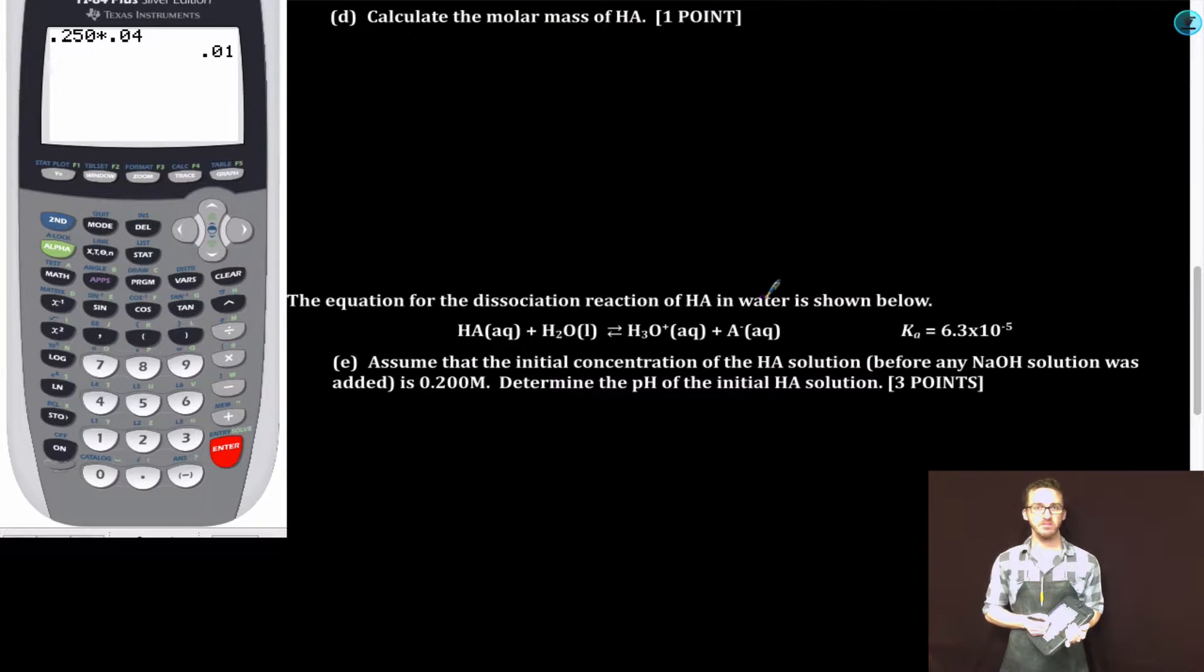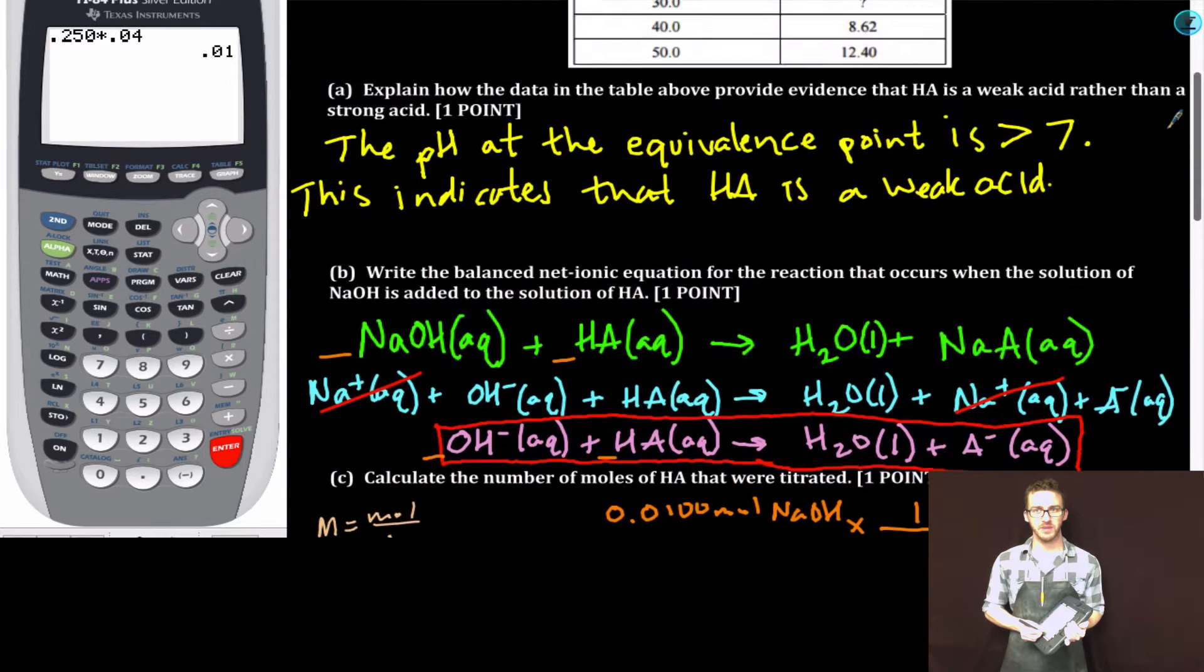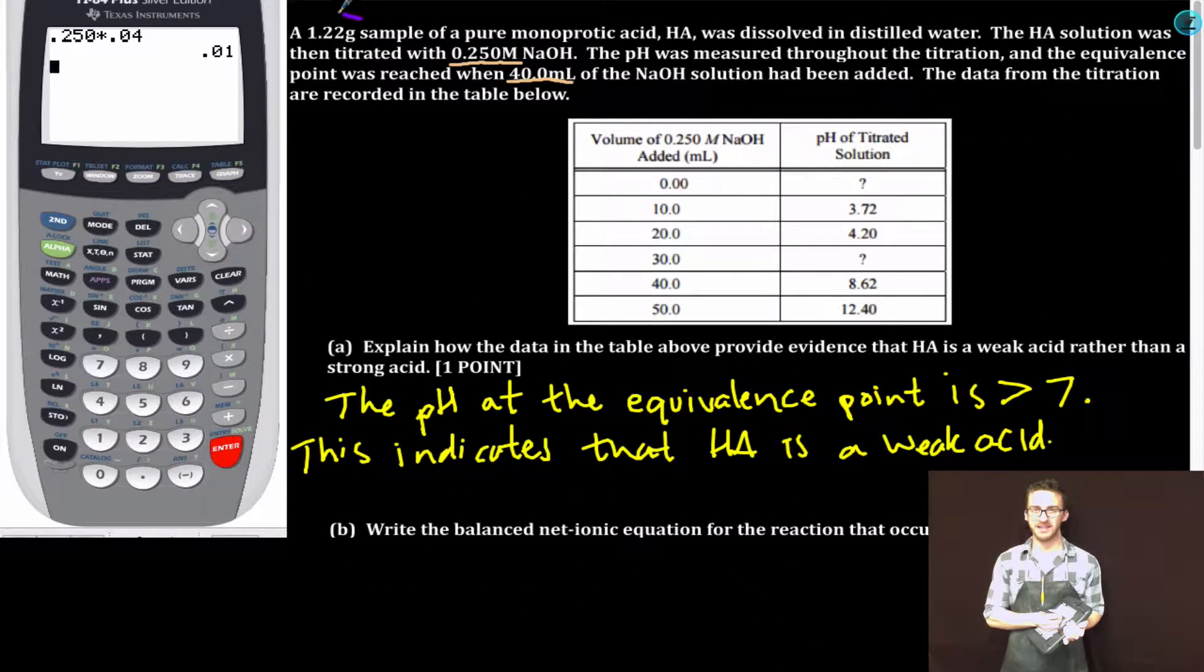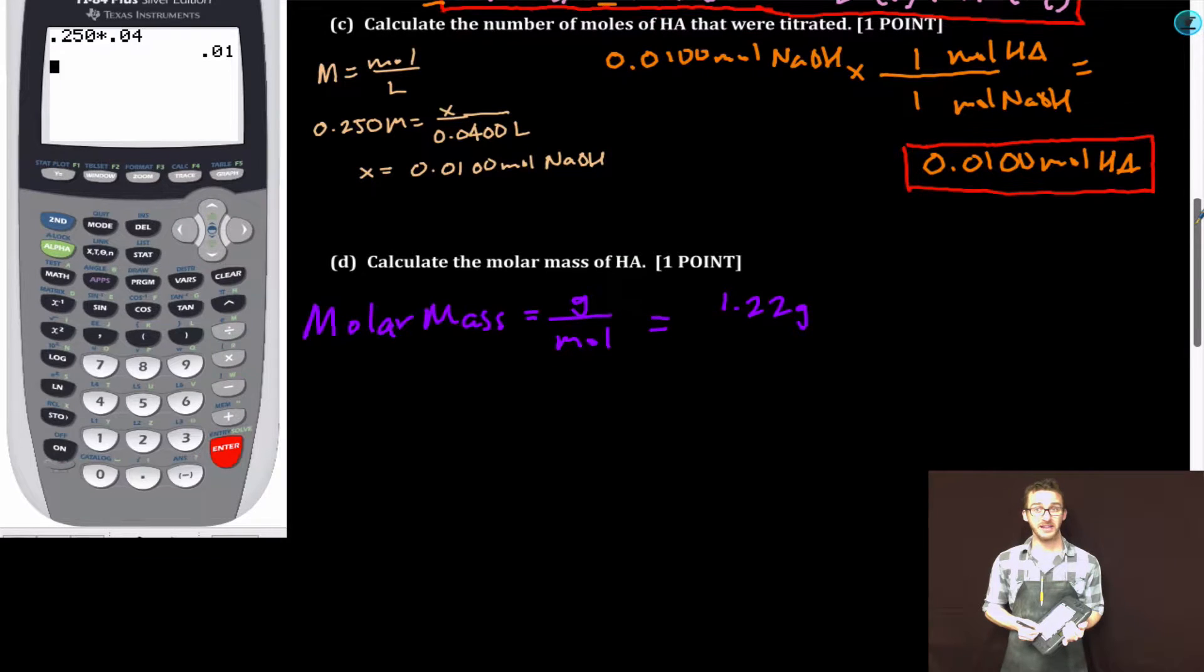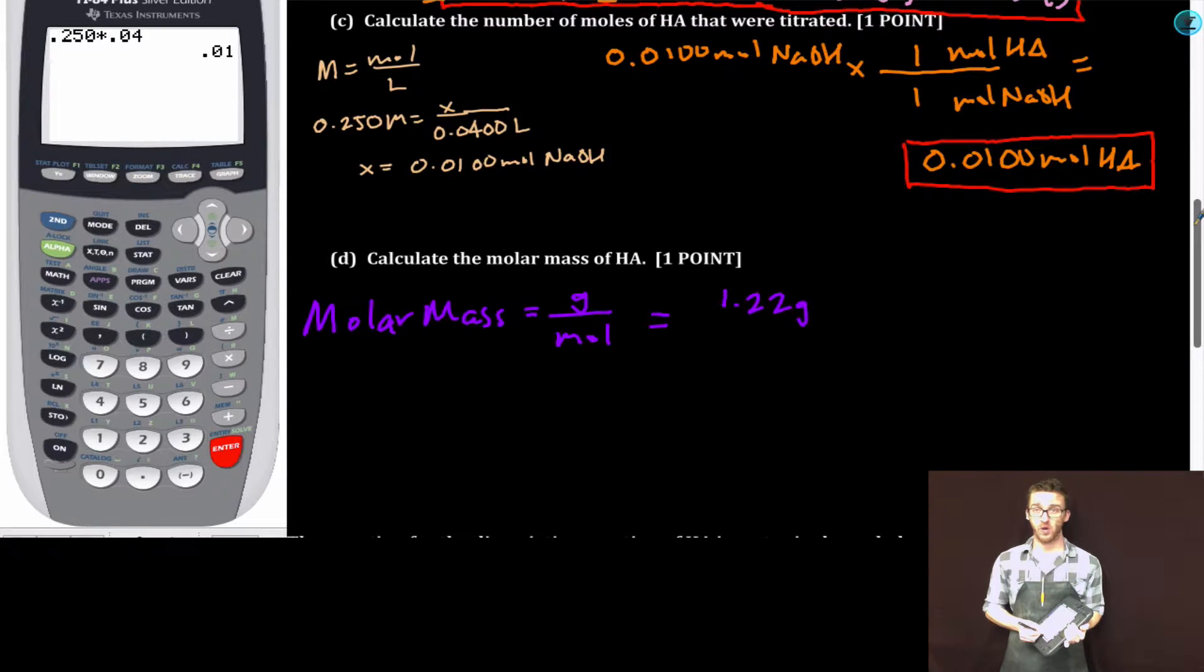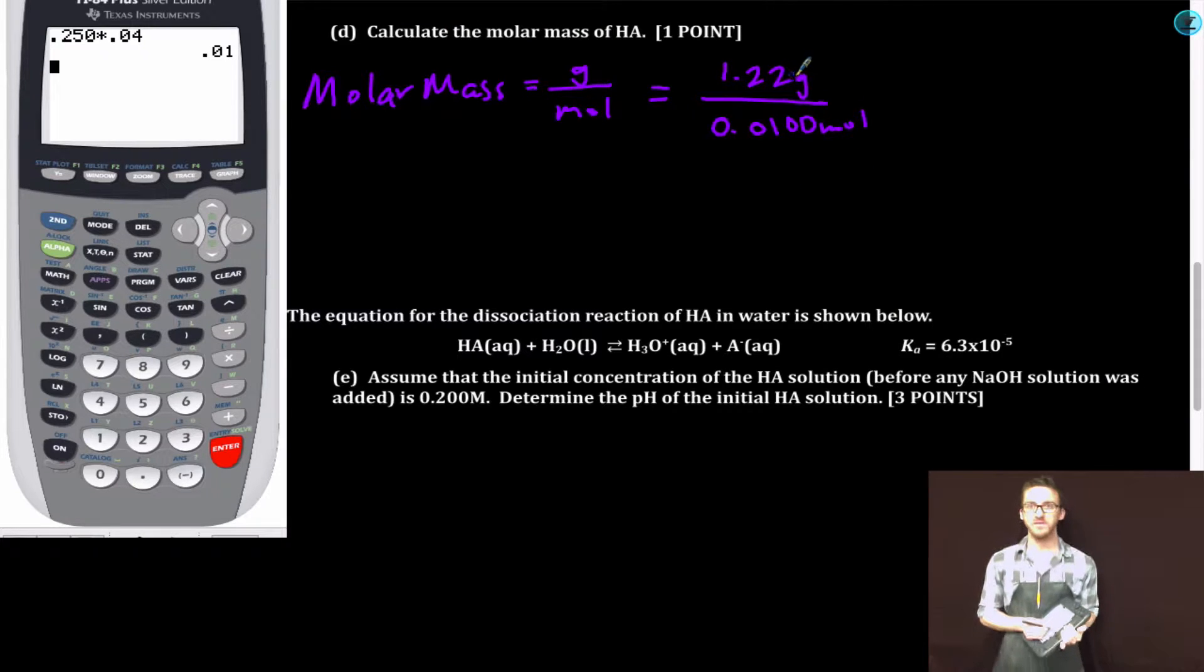Part D: Calculate the molar mass of HA. Well, let's realize that molar mass relates the number of grams per mole. Now we know in this problem that we titrated a sample of our weak acid that contained 1.22 grams of that pure monoprotic acid. And we know based on part C right above that that is equal to 0.0100 moles of our weak acid. So if I know the mass of the acid that I titrated and I know how many moles that is, I simply need to divide these two values to get the molar mass. 1.22 by 0.0100. Our molar mass is equal to 122 grams per mole.